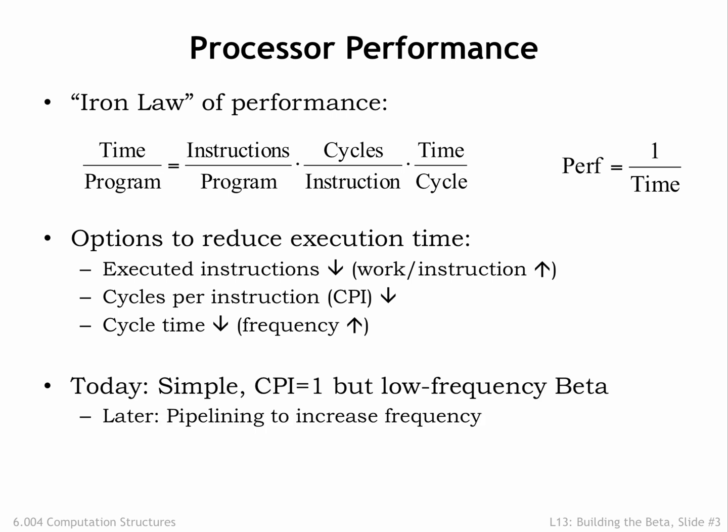Today we'll focus on an implementation for the beta instruction set architecture that executes one instruction every clock cycle. The combinational paths in our circuit will be fairly long, but as we learned in Part 1 of the course, this gives us the opportunity to use pipelining to increase our implementation's throughput. We'll talk about the implementation of a pipelined processor in some upcoming lectures.